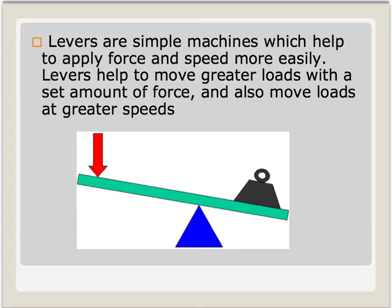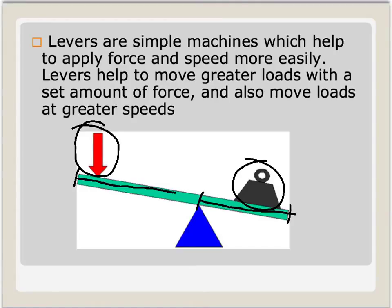Now on to levers. Levers are simple machines which help to apply force and speed more easily. Levers help to move greater loads with a set amount of force and also move loads at greater speeds. All levers involve five parts: levers, force, resistance, a resistance arm, a force arm, and a fulcrum.